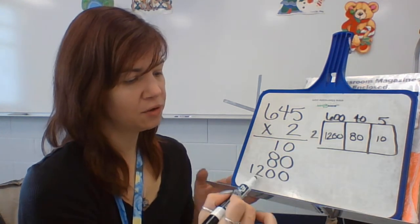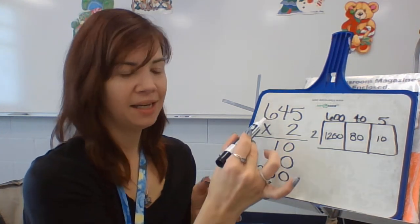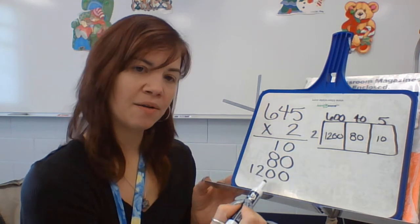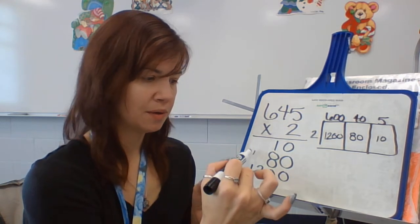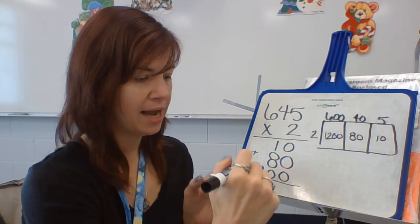And then 6 times 2, there's our 12, but it's in the hundreds place. So that's why there are these two zeros. And then we add it up.